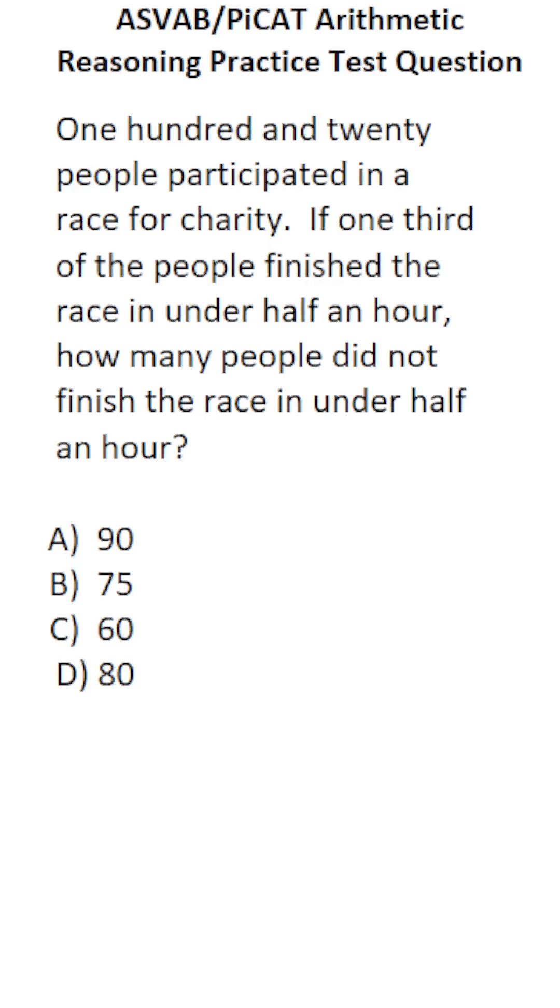So right away, you should be able to say this. If one-third of the people finished the race in under half an hour, that means two-thirds of the people did not finish the race in under half an hour.